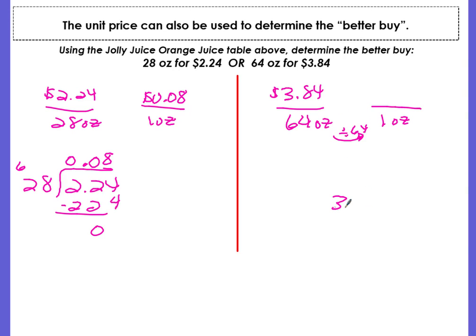And I definitely will need to do some math. So $3.84 divided by 64. Our divisor is a whole number. So I bring my decimal point straight up. 64 does not go into 3. It does not go into 38, but it will go into 384. Let's try 6. 6 times 4 is 24. 6 times 6 is 36 plus 2 is 38. Zero remainder.